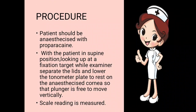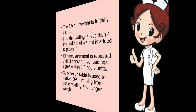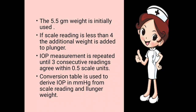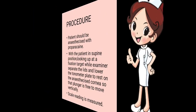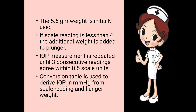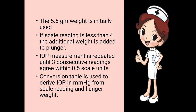The deflection of the needle shows the pressure reading of the patient's eye. The scale reading is measured. The tonometer initially uses a 5.5-gram weight. If the scale reading is less than 4, additional weight is added to the plunger. IOP measurement is repeated until three consecutive readings agree within 0.5 scale units, and we take the average of the three readings.